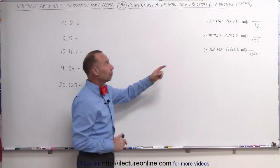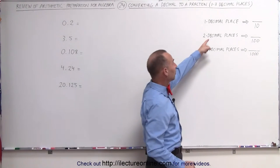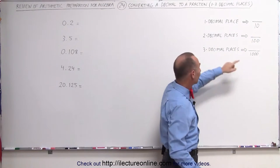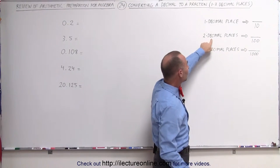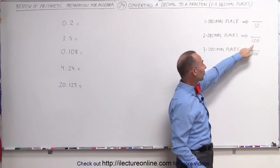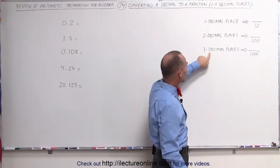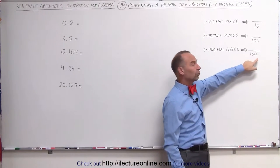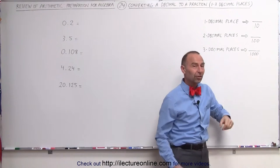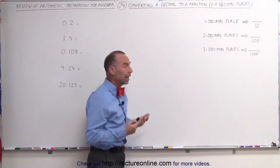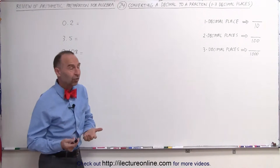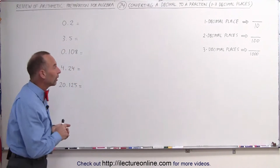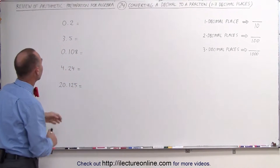If you have one decimal place, you want to write it as a fraction divided by 10. If it's two decimal places, write it as a fraction divided by 100. And if you have three decimal places, write it as a fraction over 1,000. Simply remove the decimal point and write it as a fraction over 10, 100, or 1,000.